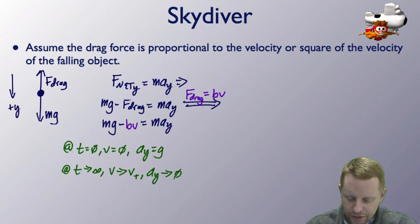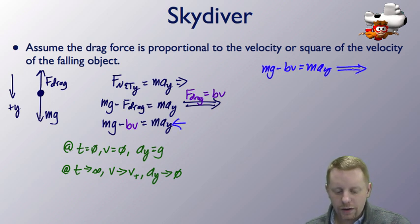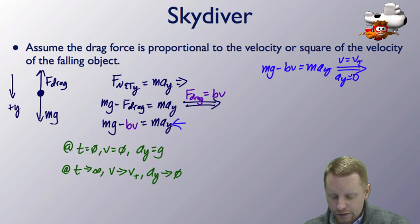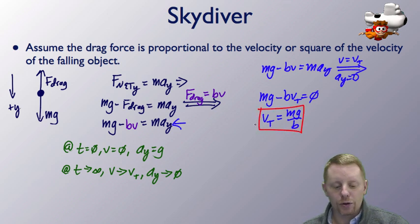So putting that all together, we could write that mg minus bv equals m a_y. And at the point where we're at terminal velocity, we know that the velocity is equal to v_t. And at that point, we also know that the acceleration in the y direction is zero. So we could then write that mg minus bv_t equals zero. Or rearranging that, v_t equals mg over b. We now have an equation for the terminal velocity.